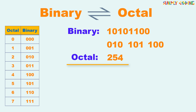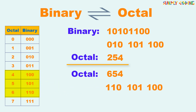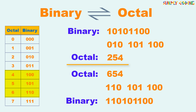We do the reverse of this if you have to convert octal to binary — we keep the conversion table handy. Let's take the octal number 654. For each octal number, we take its equivalent 3-digit binary number and concatenate those numbers. This gives us the answer in binary, which is 110101100.